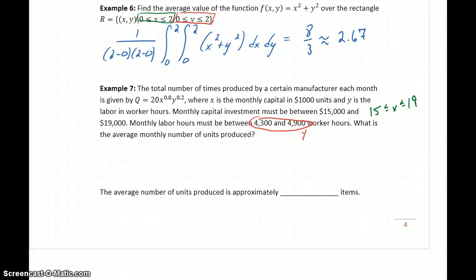To write our expression for the average value, this would be 1 over (19-15) times (4,900-4,300). We would have the double integral of 20x^0.8 y^0.2.